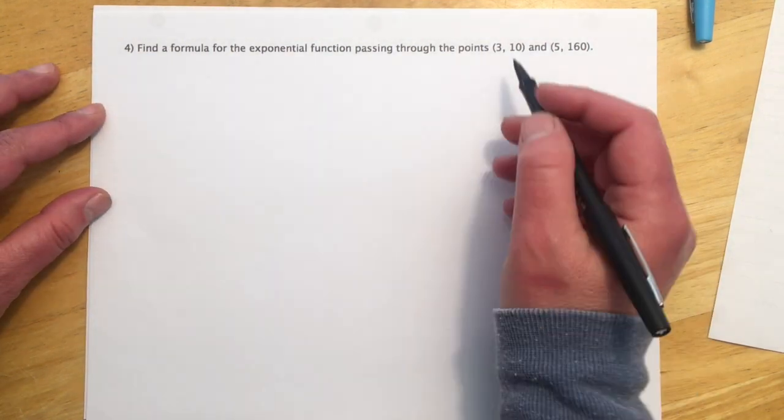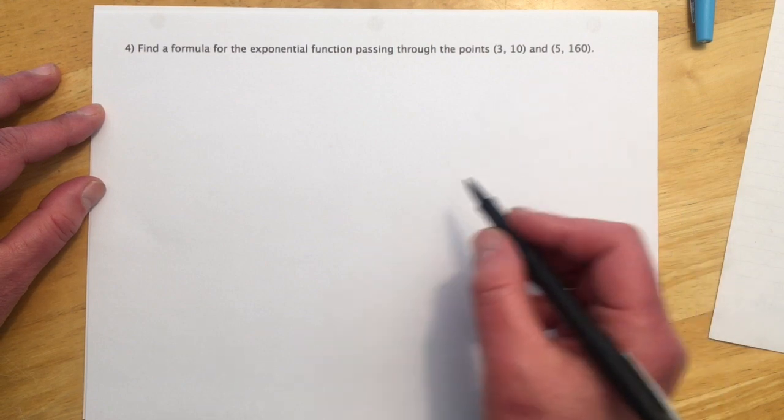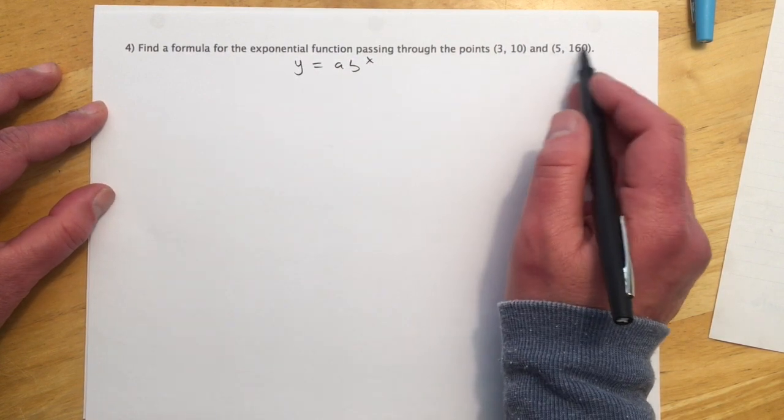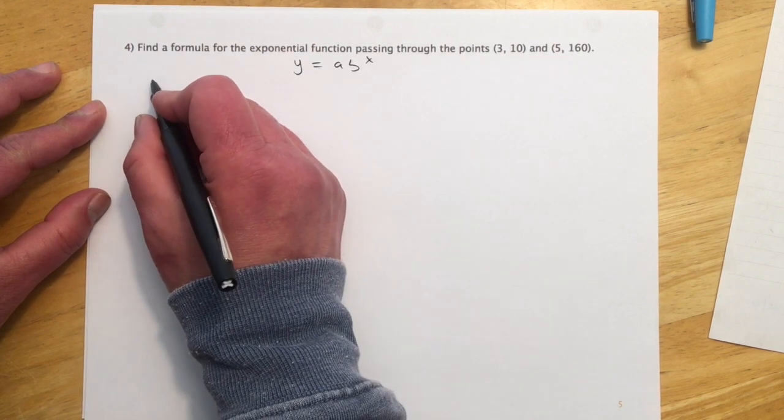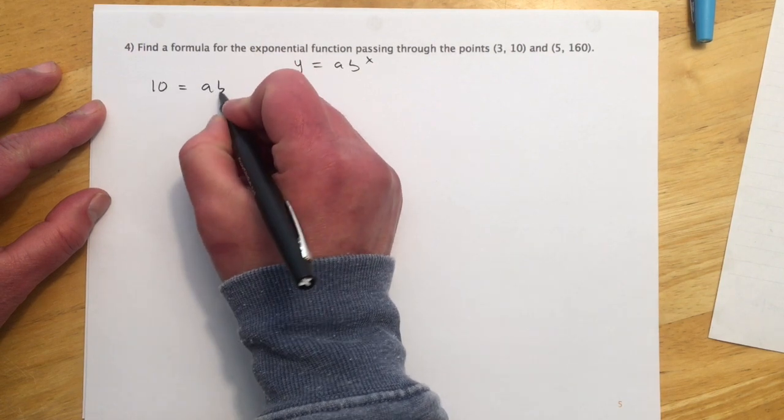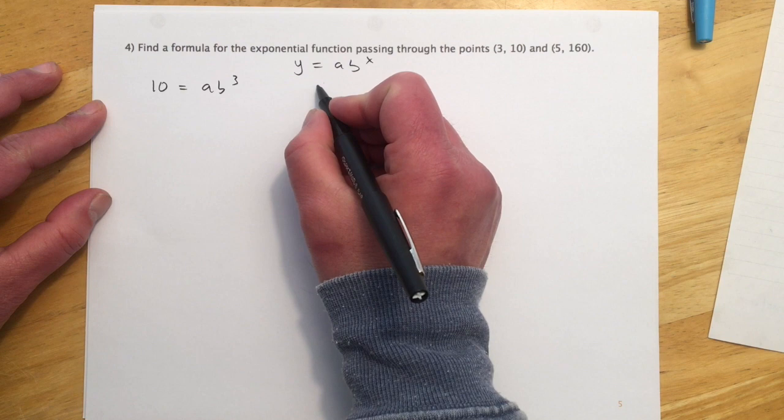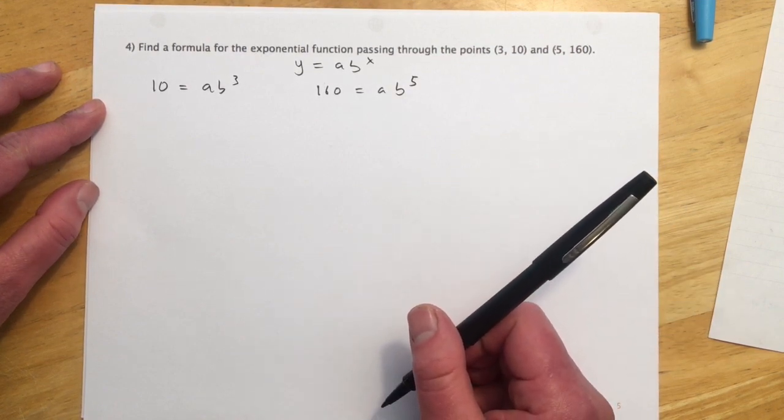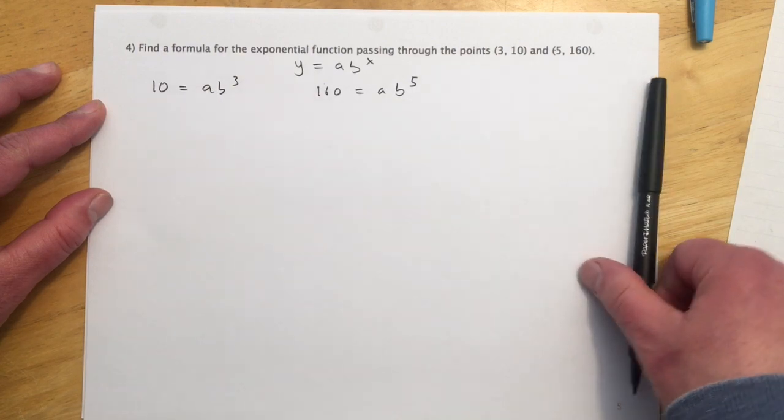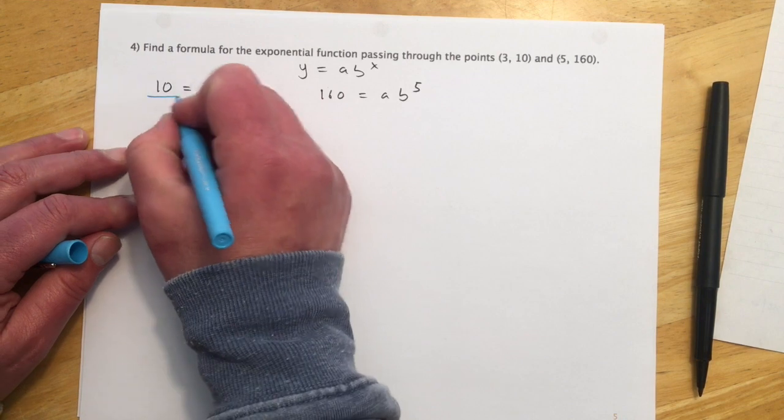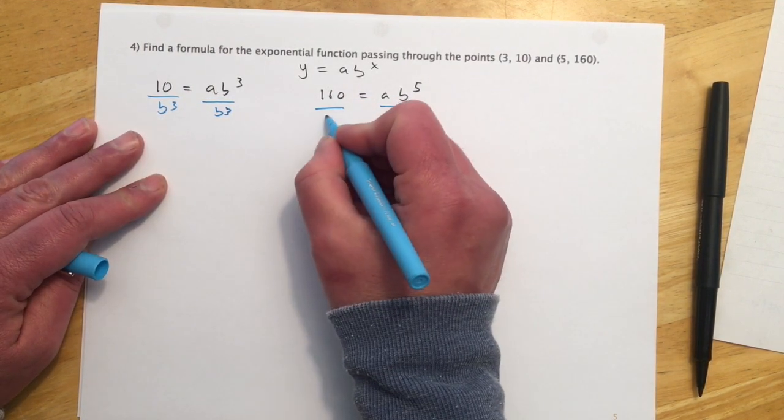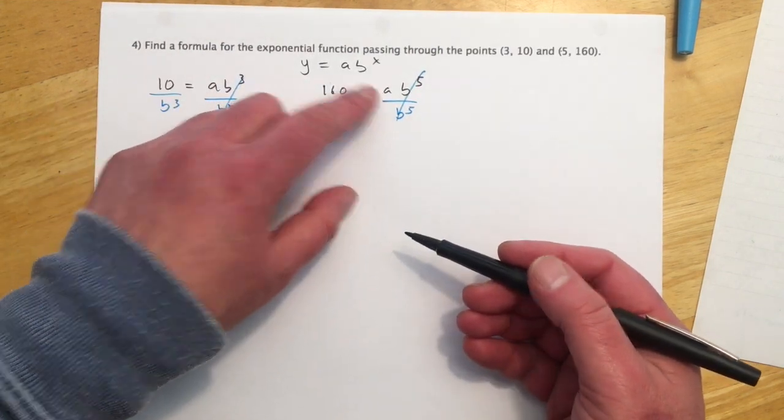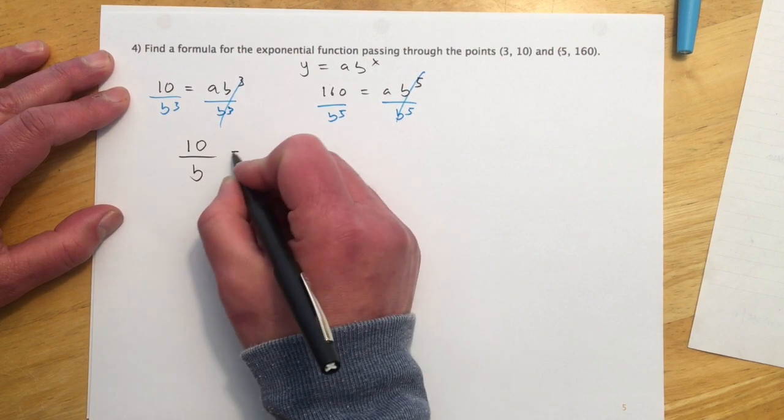So number 4 isn't quite as nice as number 3 because we didn't get the 0 number, so we didn't get A. So I'm going to use the same formula, though. Y = ab^x. And I'm just going to set this up once with 3 and 10 and once with 5 and 160. So over here, if y is 10 when x equals 3, so A times b^3. And over here I'd have 160 when A times b, when x is 5. So then what I'm going to do is I'm going to solve both sides to isolate A. So here I'll divide out b^3. And here I'll divide out b^5. And so what that lets me do is now 10 over b^3 equals A, 160 over b^5 equals A. Now I can set them equal to each other since they equal the same thing.